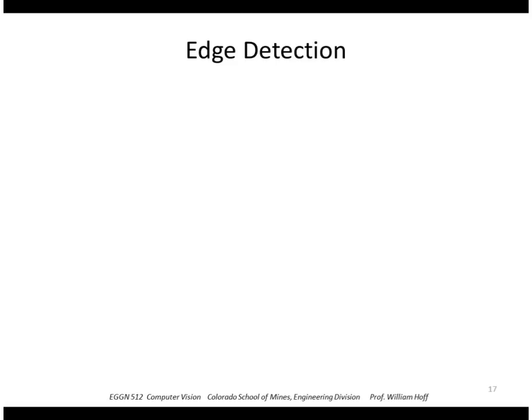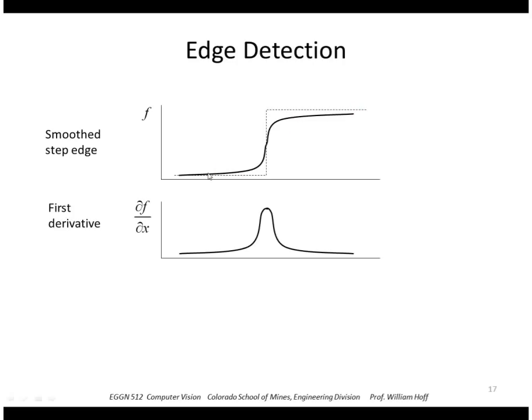So if I want to detect this step edge, think of this as the x position in the image and this is the intensity. So this is a one-dimensional profile and the intensity rises abruptly here and I want to detect that. And let's say I first smooth it with a Gaussian so the actual profile of the image looks like this. If I were to take the first derivative, the first derivative is just the slope of this, so the slope increases gradually, gets to a maximum here, right in the middle, and then starts tailing off and goes back down to zero.